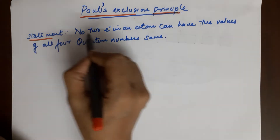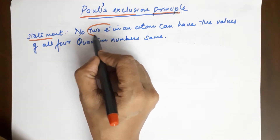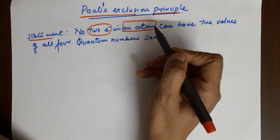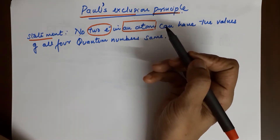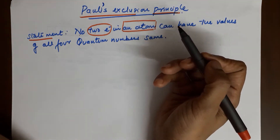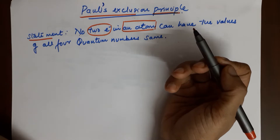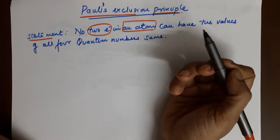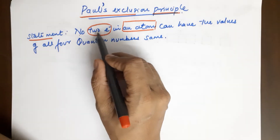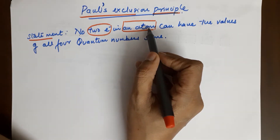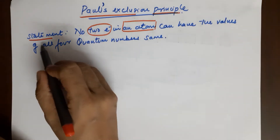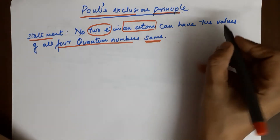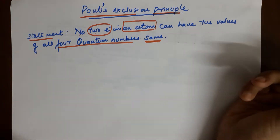The statement first: no two electrons in an atom — we are talking about a particular atom, which has many electrons in it. For example, oxygen has 8, nitrogen has 7, scandium has 21, iron has 26, and so on. No two electrons can have the values of all four quantum numbers the same. That means there has to be a difference in at least one quantum number value.